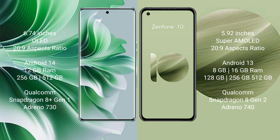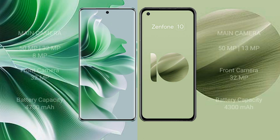Oppo Reno 11 Pro has 256GB or 512GB internal storage, Qualcomm Snapdragon 8 Gen 1 processor and GPU Adreno 730. Asus Zenfone 10 comes with 8GB or 16GB RAM and 128GB, 256GB, or 512GB internal storage, Qualcomm Snapdragon 8 Gen 1 processor and GPU Adreno 740.